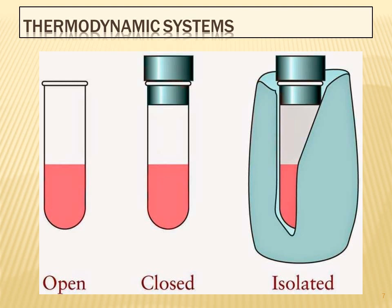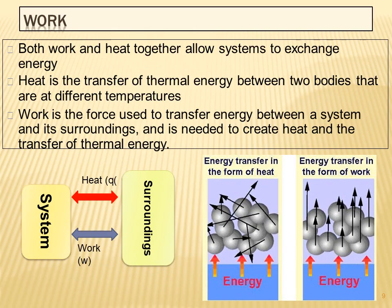Thermodynamic system: we have open, closed, and isolated systems — these are three types. Isolated is considered a model for the universe. Both work and heat together allow the system to exchange energy.